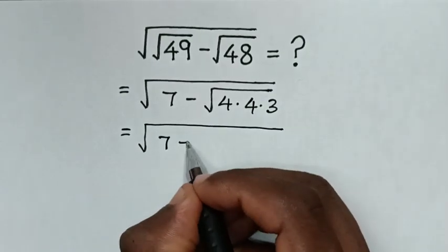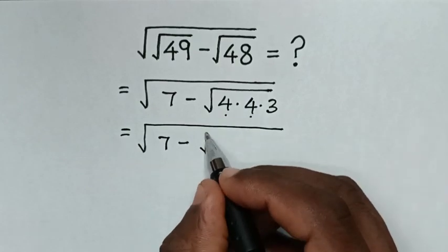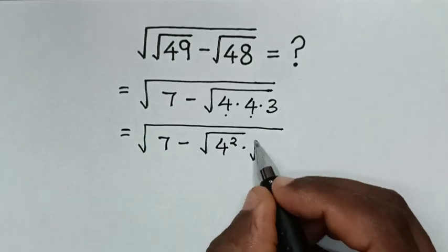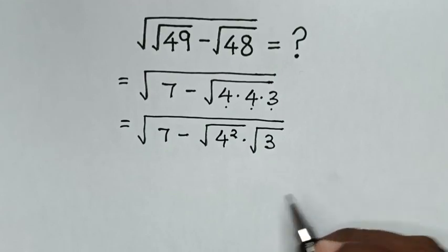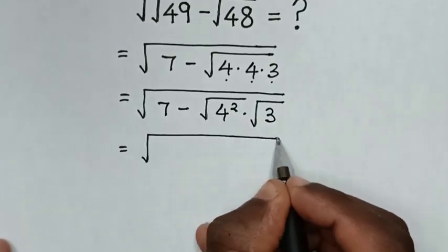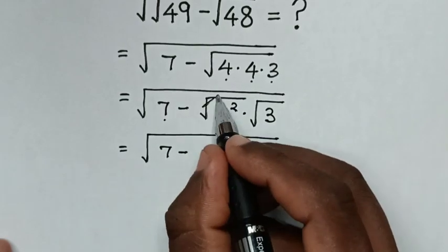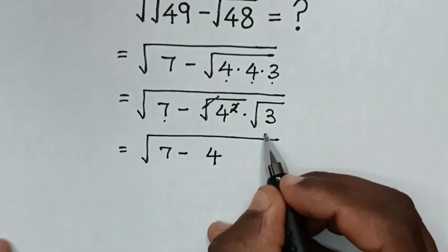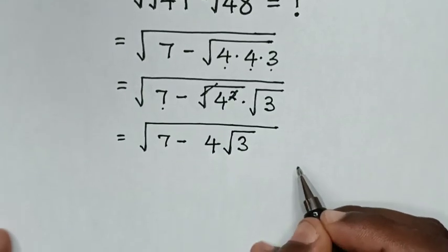Then it will be equal to square root of 7 minus square root of 4 times 4, which is the same as square root of 4 squared, then times square root of 3. In the next step, it will be equal to square root of 7 minus: the square root cancels with the square, so it becomes 4 times square root of 3.